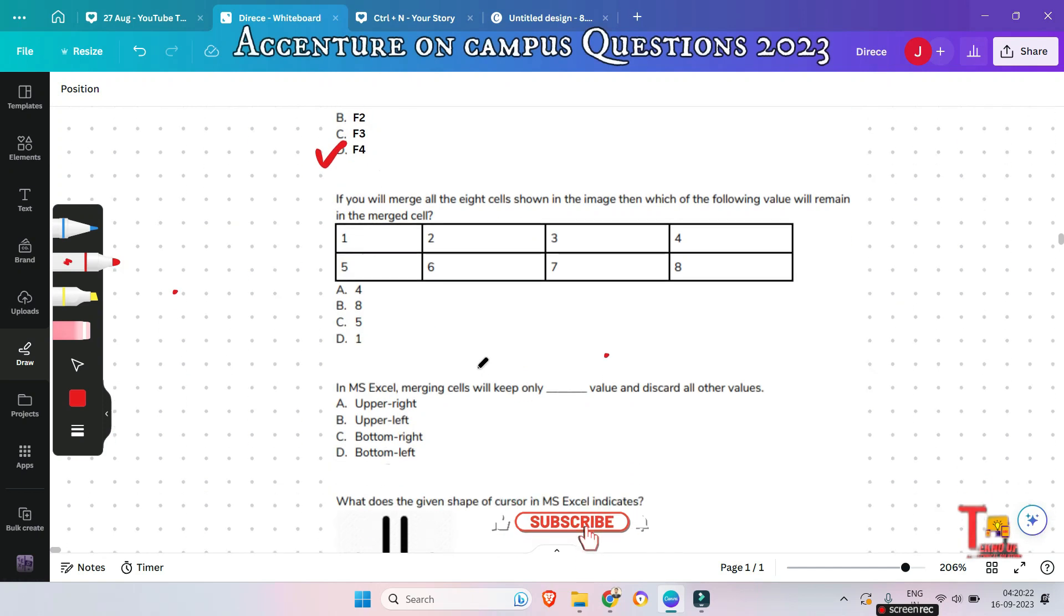Okay, let's go to the next question. If you will merge all the 8 cells shown in the image, then which of the following value will remain in the merged cell? 1, 2, 3, 4, 5, 6, 7, 8. So, what could be the answer?